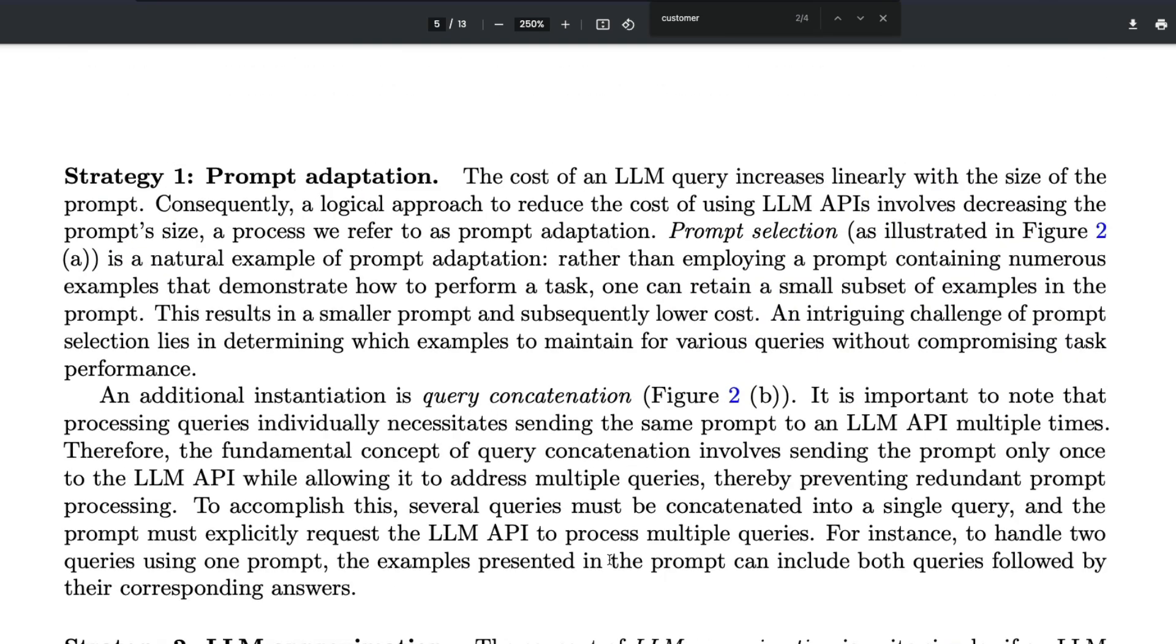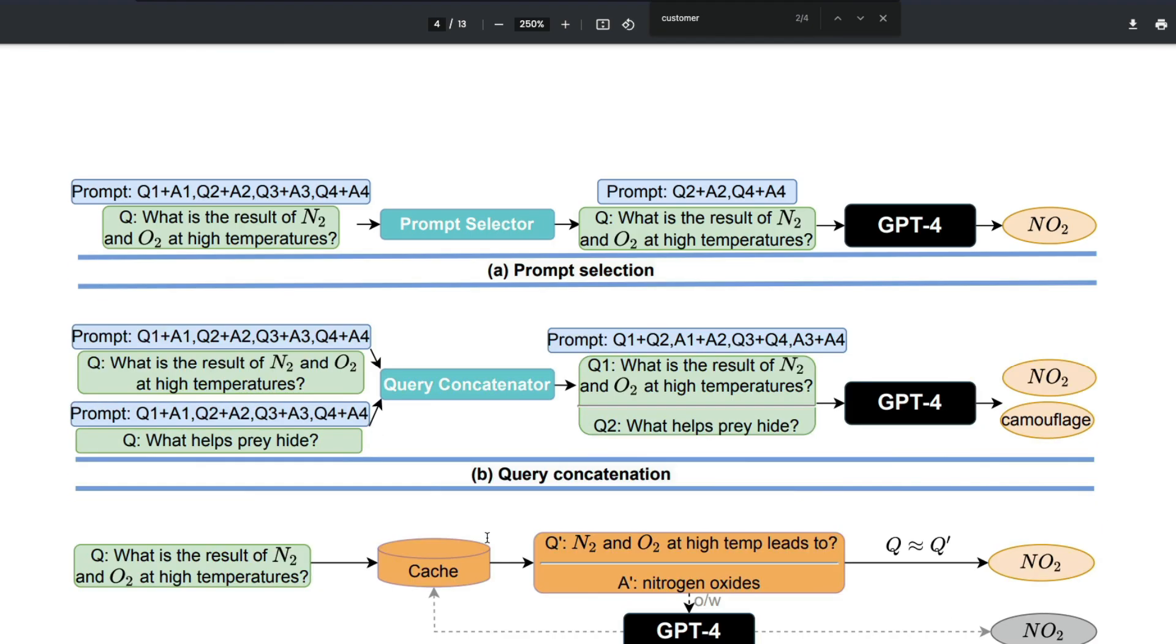When you get a prompt from the user, instead of sending the prompt directly as it is, you send the prompt through a prompt selector. This prompt selector makes the choice about what to send inside the LLM API. For example, if the user is sending question one answer, question two answer, question three answer, question four answer to help the LLM answer, you can make a choice. Your prompt selector can say, 'Okay, maybe this LLM is capable of answering this question only with two sets of questions rather than four.'